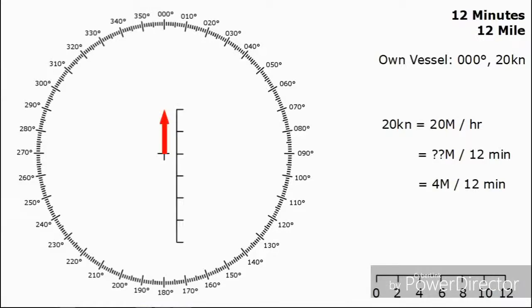This gives us the length of our vector. We can place on our own vector of course pointing due north, corresponding with our course, and the length of it corresponding with 4 miles which indicates our speed.